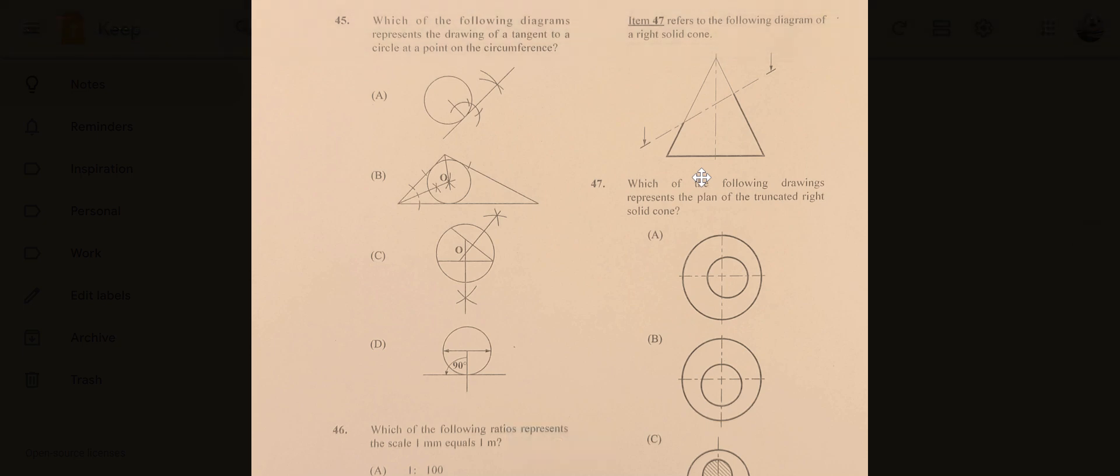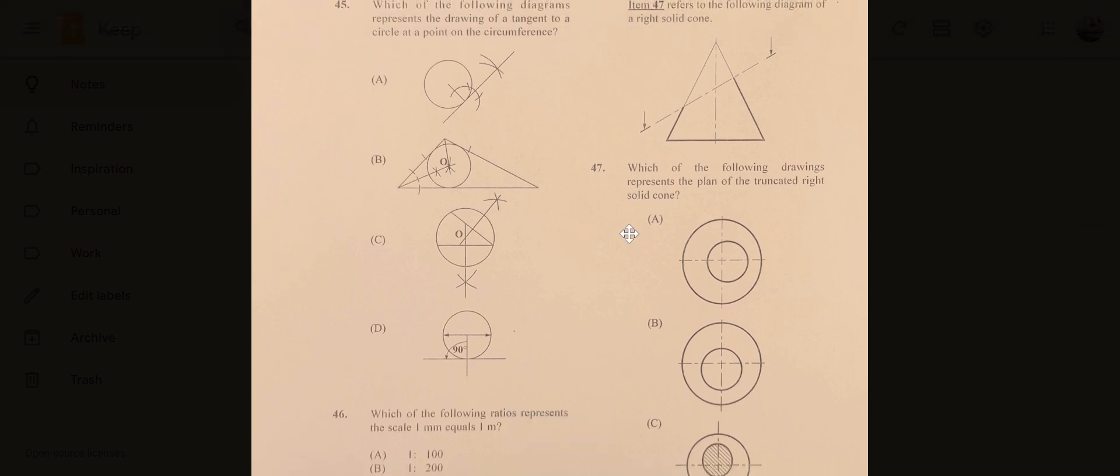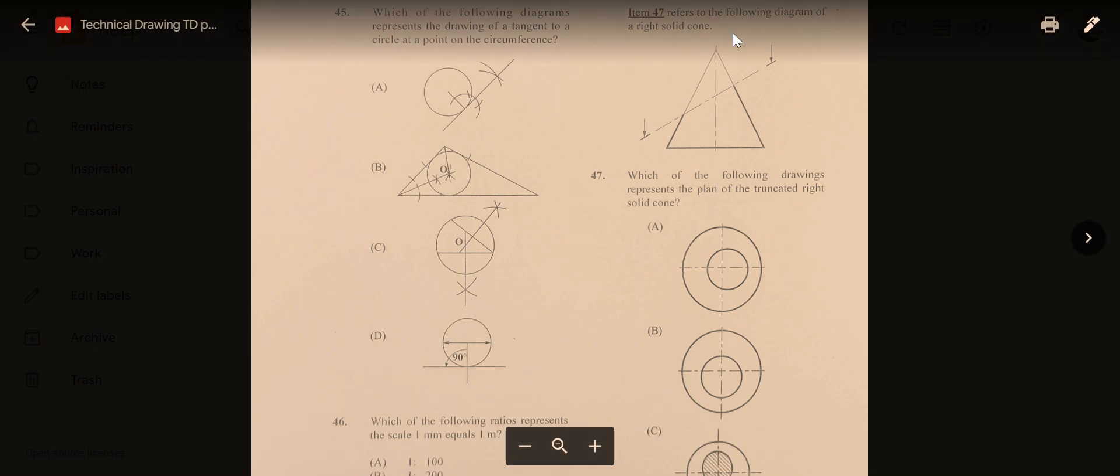And number 47: which of the following drawings represents the plan of the truncated right solid cone? All right, so this is the cone here that was truncated. You can see the angle of the cut.